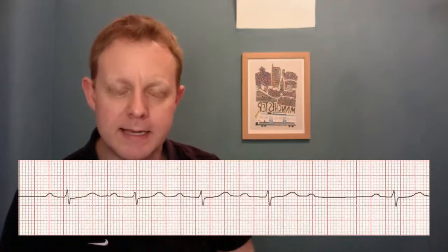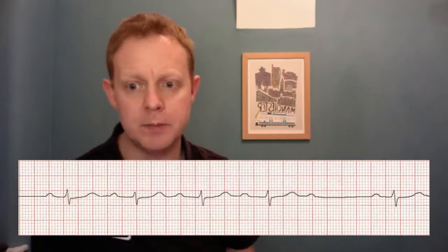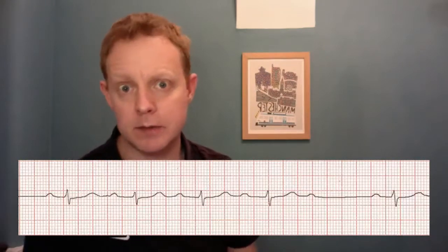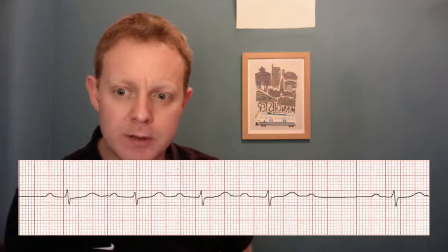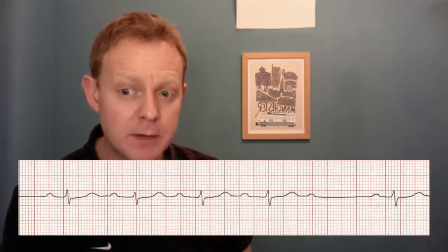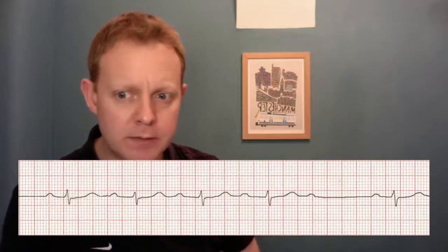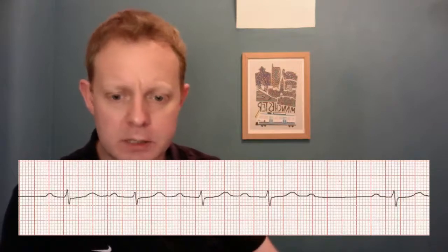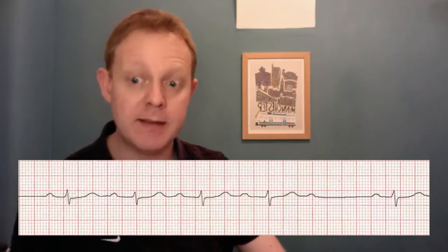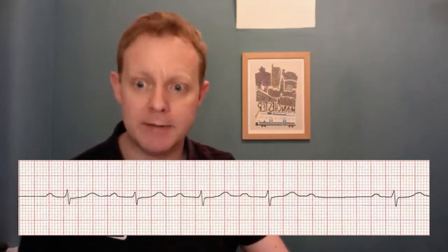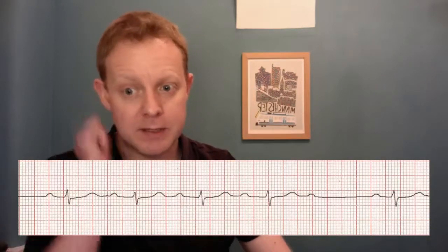And that is characteristic of the Wenckebach phenomenon. This is a second degree heart block because we're dropping some beats and conducting others, and it's Mobitz type 1 — not quite as bad as Mobitz type 2 generally, and not quite as risky of a progression to third degree heart block. Sometimes even athletes will get Wenckebach heart block when they have a high vagal tone.